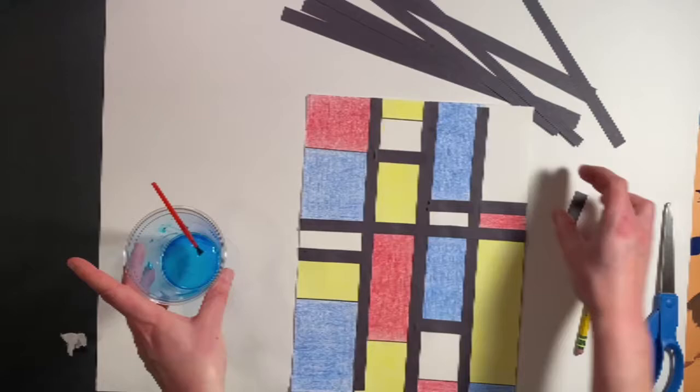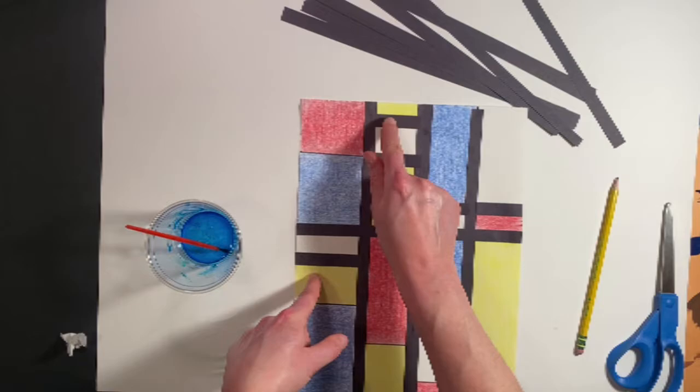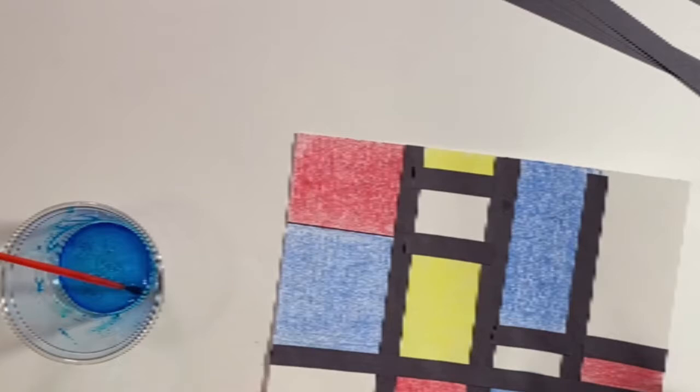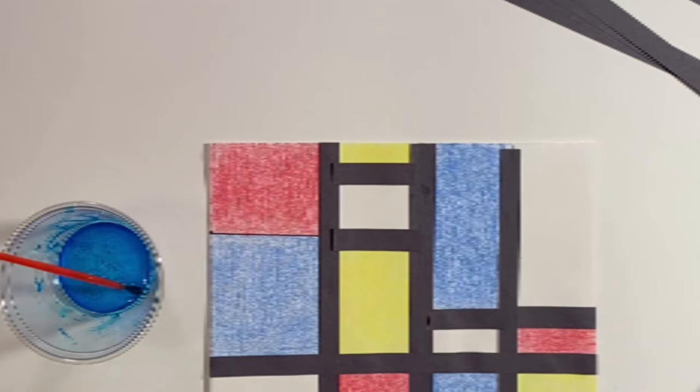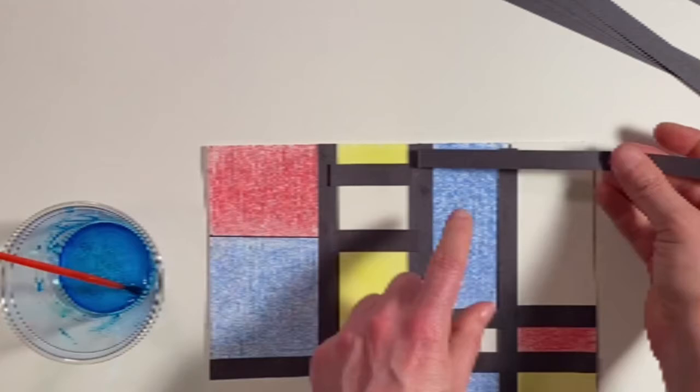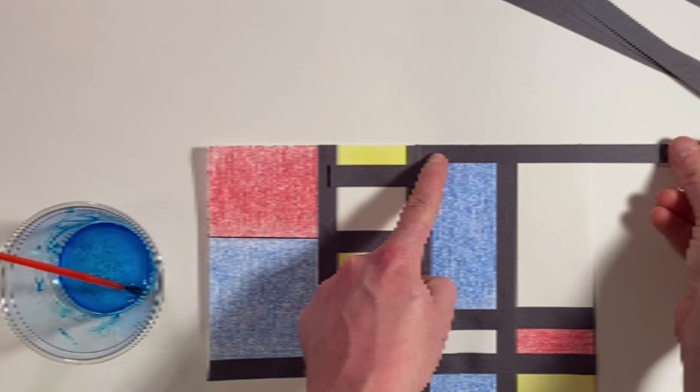Now you see here that spot that's missing. We can easily fix that by just placing a piece of black construction paper over it, either going up and down or going across, or maybe even going across a wider section there like I'm doing. And that will cover it right up.